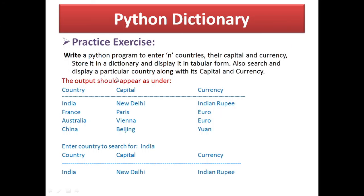Similarly, an exercise is provided: store information for n countries — their capital and currency — in a dictionary. Take the country name as the key and capital and currency as a list (the value). Populate the dictionary by inputting data. Display the full dictionary, then allow searching by country name. If found, display country name, capital, and currency; if not found, display an error message that this country is not found in the dictionary.